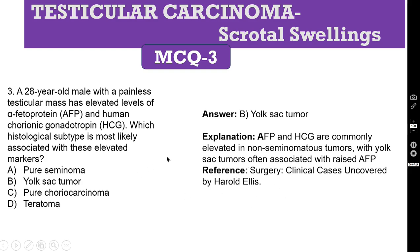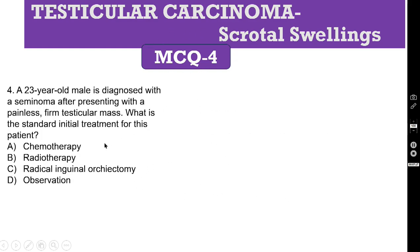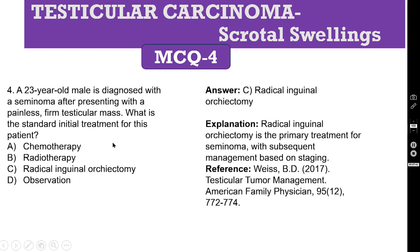MCQ 4. A 23-year-old male is diagnosed with a seminoma after presenting with a painless firm testicular mass. What is the standard initial treatment for this patient? A. Chemotherapy. B. Radiotherapy. C. Radical Inguinal Orchidectomy. D. Observation. The correct answer is C — Radical Inguinal Orchidectomy. Radical Inguinal Orchidectomy is the primary treatment for seminoma, with subsequent management based on staging. Reference: testicular cancer management by American Family Physicians.